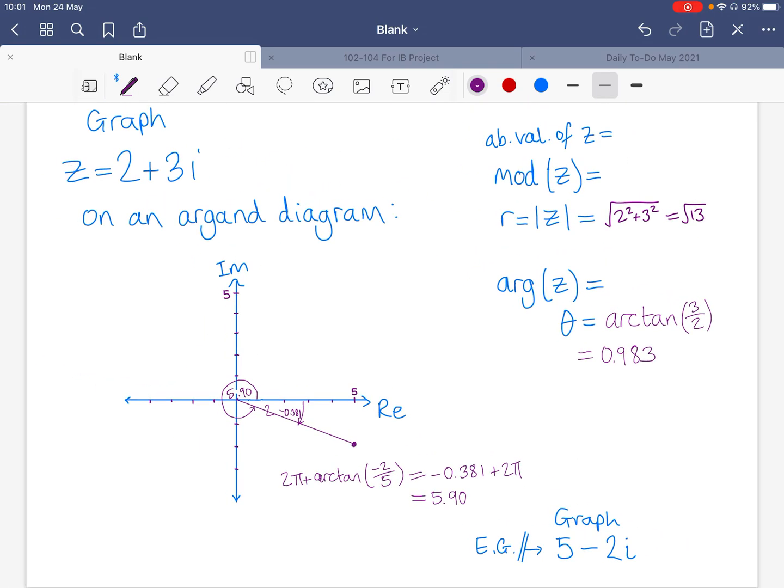Well, that doesn't really depend on quadrants and negatives too much. Obviously, you're just going to take 2 and 5 and do square root of 2 squared plus 5 squared. And that's going to be the square root of 29.